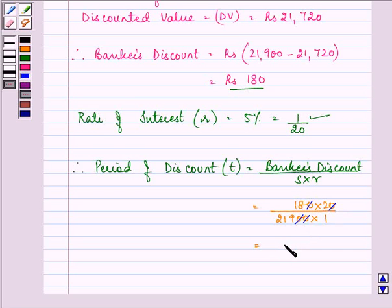So, we have it as, it will also get multiplied by 365 in order to find out the period of discount in days.